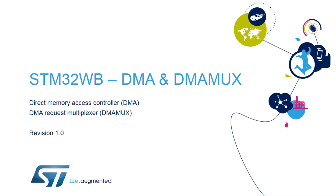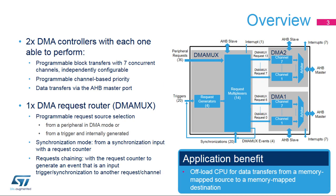Welcome to the presentation of the STM32WB Direct Memory Access Controller, or DMA. It covers the main features of the DMA controller module, enhanced by the new DMA Request Multiplexer, or DMA MUX, module. The main application benefit of the DMA is to offload the CPU for data transfers from any memory-mapped source towards any memory-mapped destination.